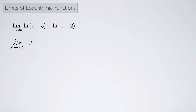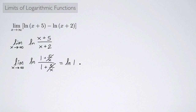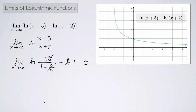Here's one last example: the limit as x approaches infinity of the natural log of (x + 5) minus the natural log of (x + 2). The natural thing to do is rewrite this using log rules, giving the limit as x approaches infinity of the natural log of (x + 5)/(x + 2). As x approaches infinity, this looks like a rational function inside the log. Using the same trick for infinite limits of rational functions, I rewrite the fraction as (1 + 5/x)/(1 + 2/x). As x goes to infinity, the extra terms drop out, leaving the natural log of 1, which equals 0. The graph confirms that as x approaches infinity, this function approaches 0.